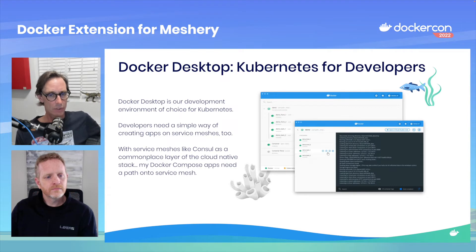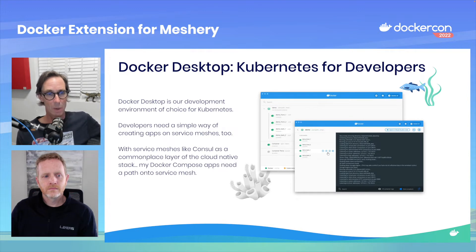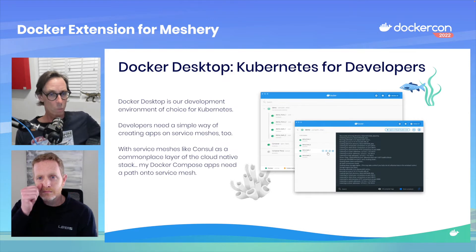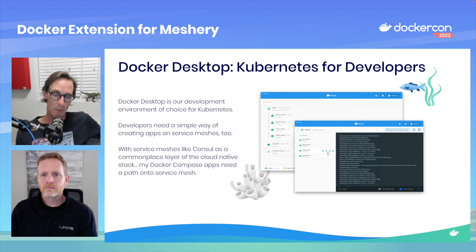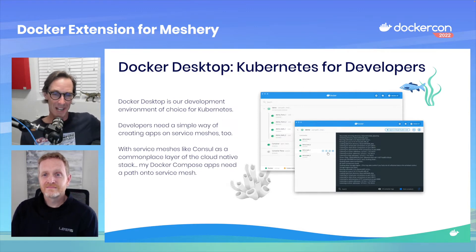As the world started to change and people started using containers in production — running things like Mesos and Marathon — Docker Desktop was there and I was using it day in, day out. Then of course we moved to Kubernetes, and Docker again gave me a way to run Kubernetes locally. Now we're moving further still, starting to look at service mesh running on top of Kubernetes.